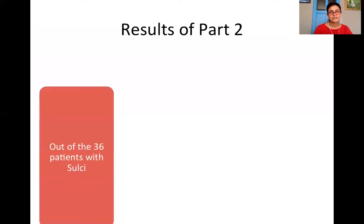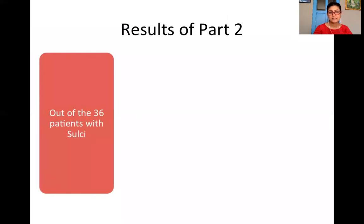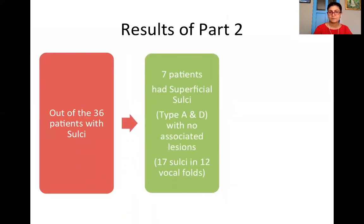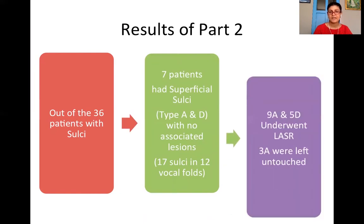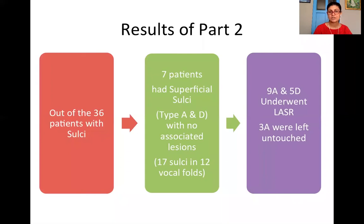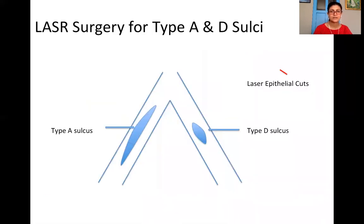For the second part of our study, out of 36 patients with sulci, there were seven patients who had superficial sulci — that is, type A and D — with no associated lesions, who were selected for surgery. We operated on 14 out of 17 such sulci: 9 type A and 5 type D, which underwent LASR. We ensured no associated lesions so that improvement would be specifically attributable to this surgery and subsequent therapy.